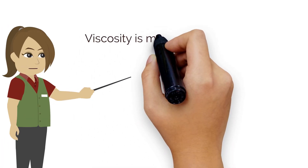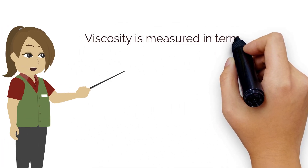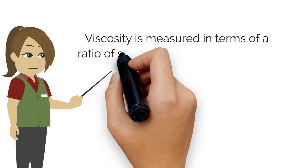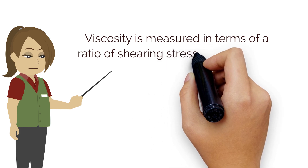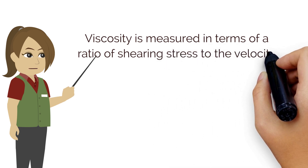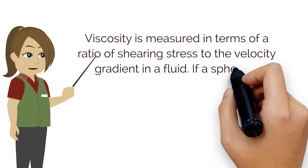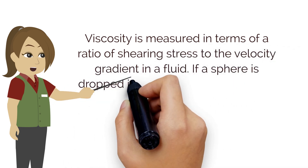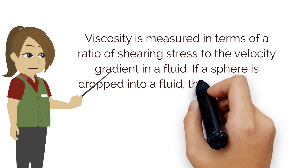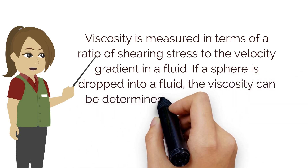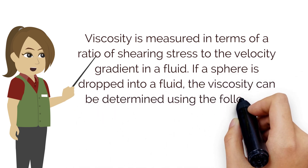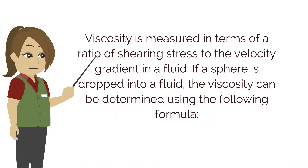Viscosity is measured in terms of a ratio of shearing stress to the velocity gradient in a fluid. If a sphere is dropped into a fluid, the viscosity can be determined using the following formula.